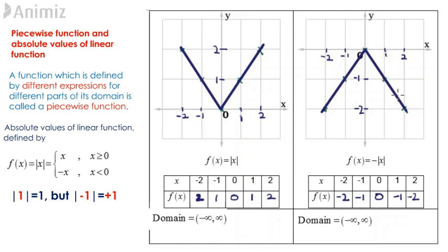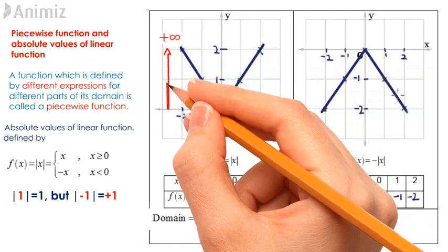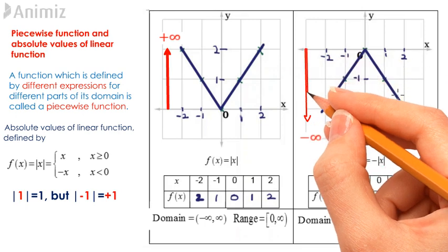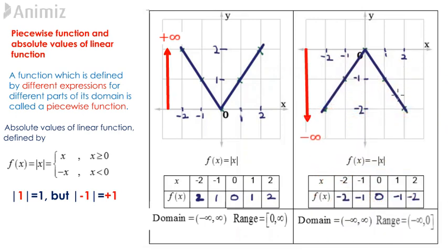For positive modulus x, the minimum value for y is 0. Its range is from 0 to positive infinity. For negative modulus x, the maximum value for y is 0. Its range is from negative infinity to 0.